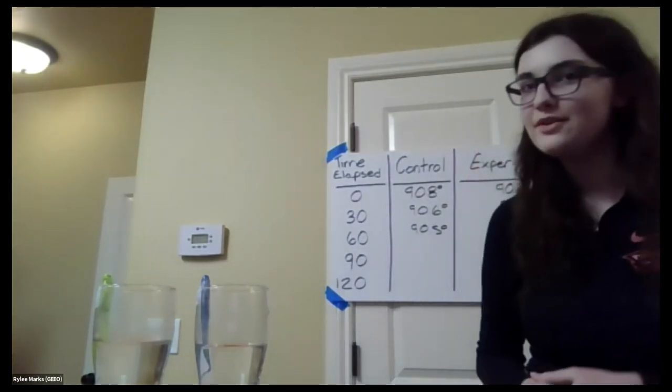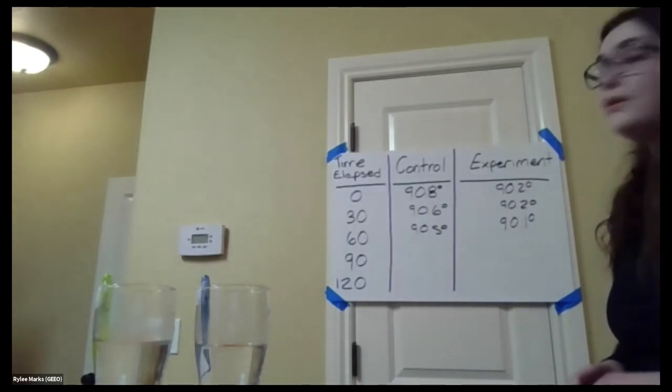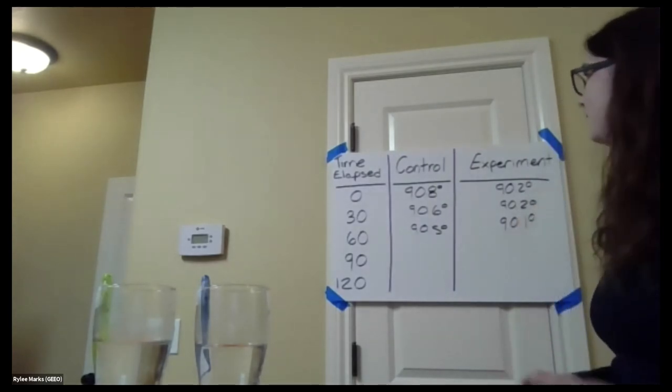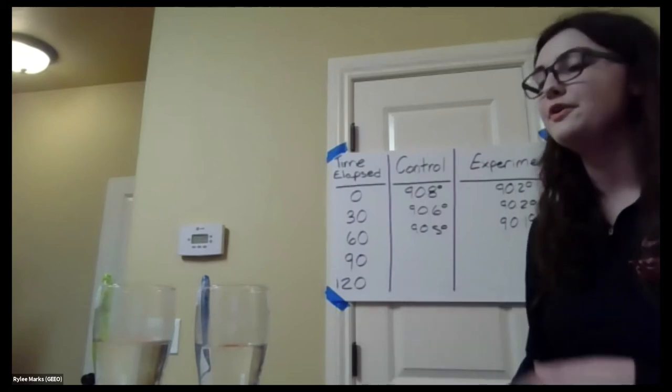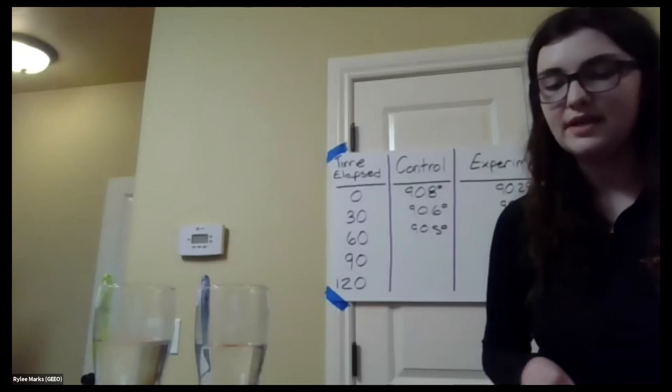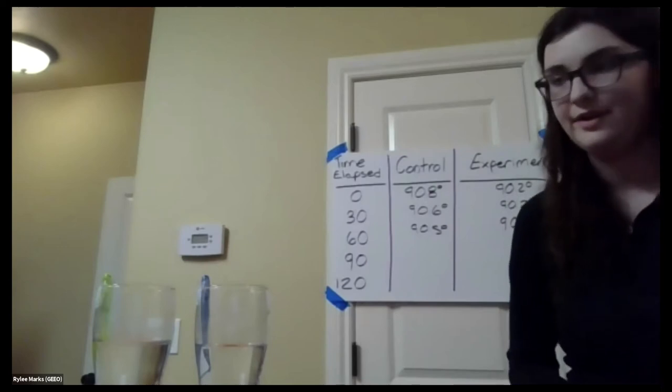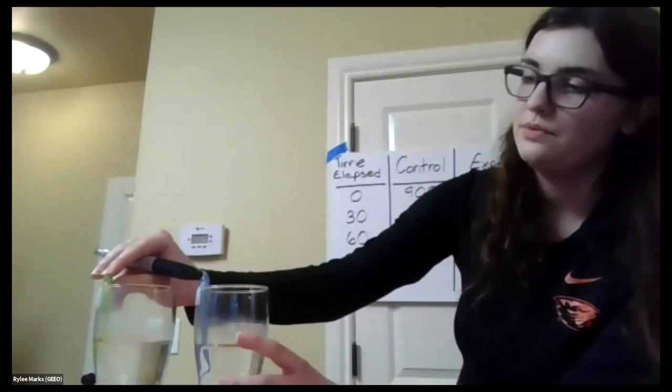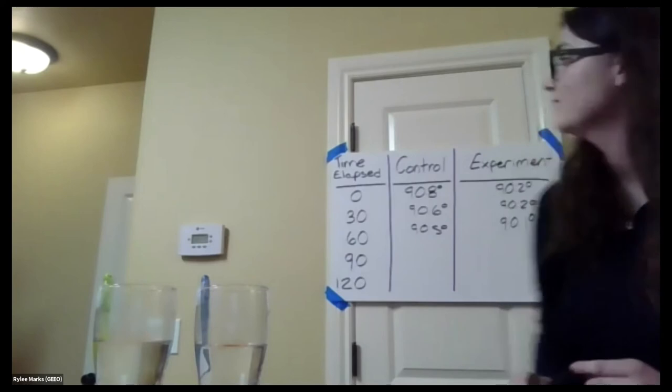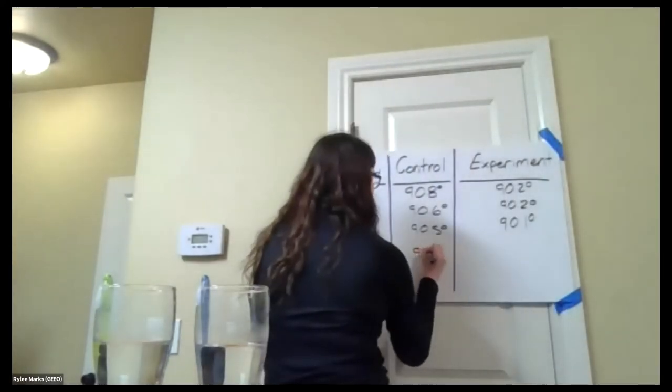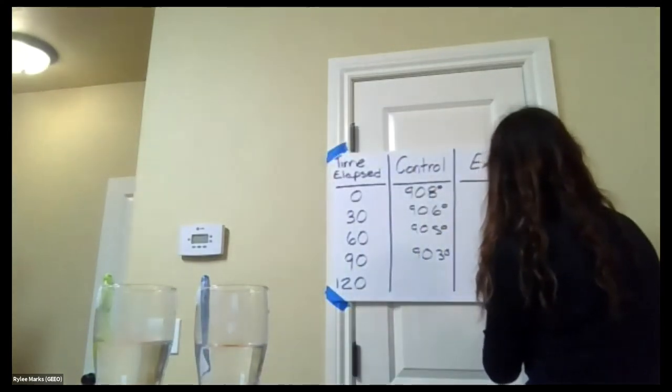When you're doing an experiment, you only want one variable to be different, and in this case it's the mint. In both your control and your experiment, the temperature is going down. But we don't know if that's due to the mint or due to other factors such as the temperature of the air in your room, how hot the water was when it came out of your sink, stuff like that. So we want to make sure that if the water is changing, it is because of the mint and not because of anything else. Let's reset our thermometers. All right, now our control is at 90.3 and our experimental is at 90.0.